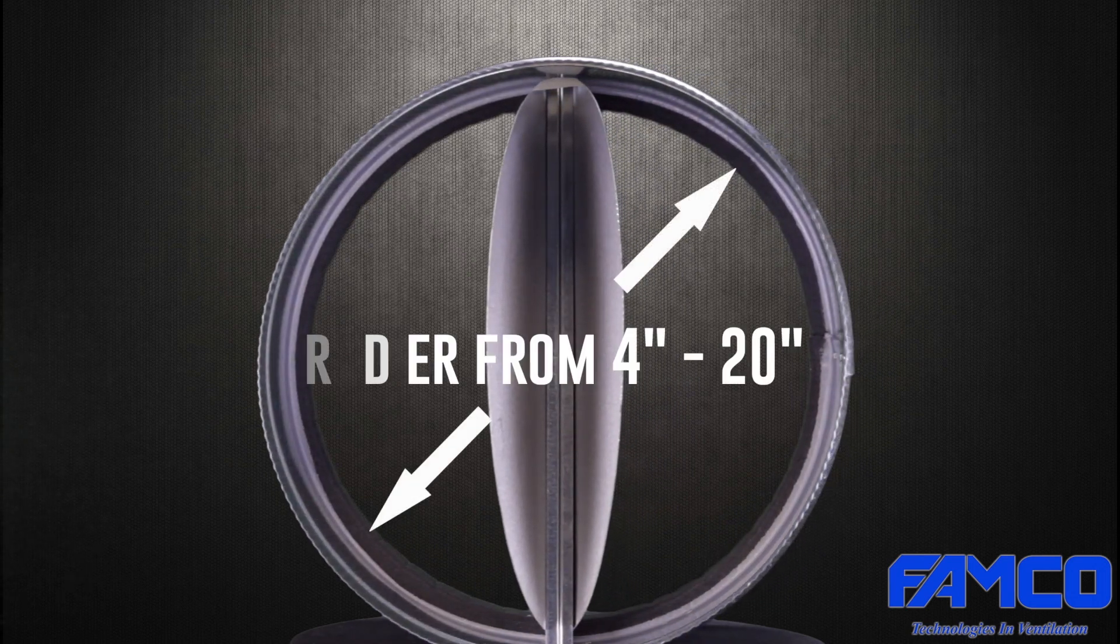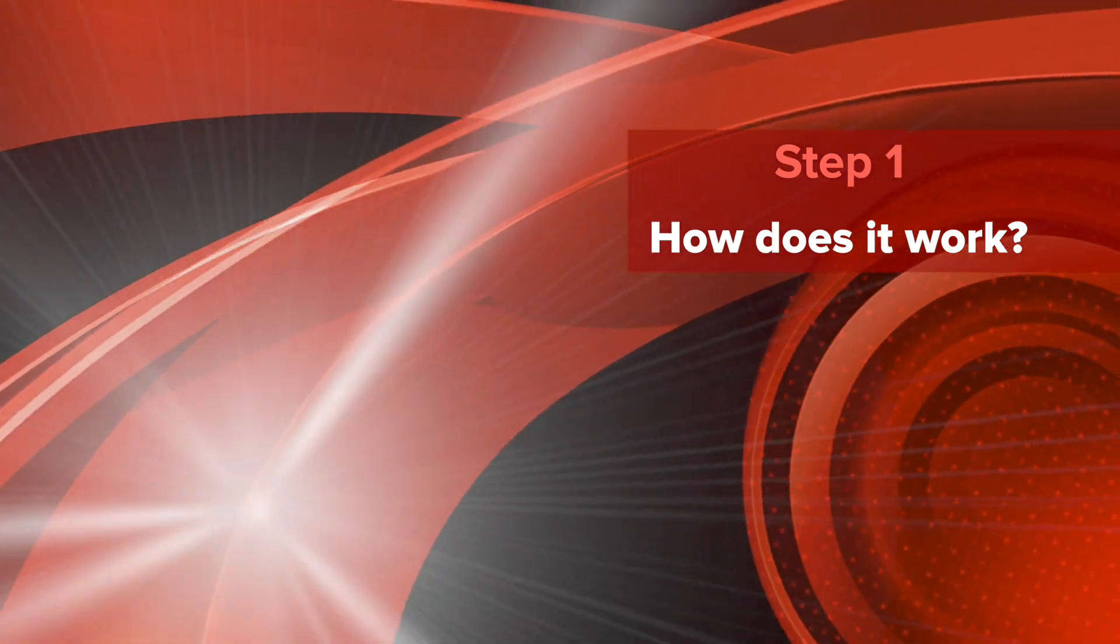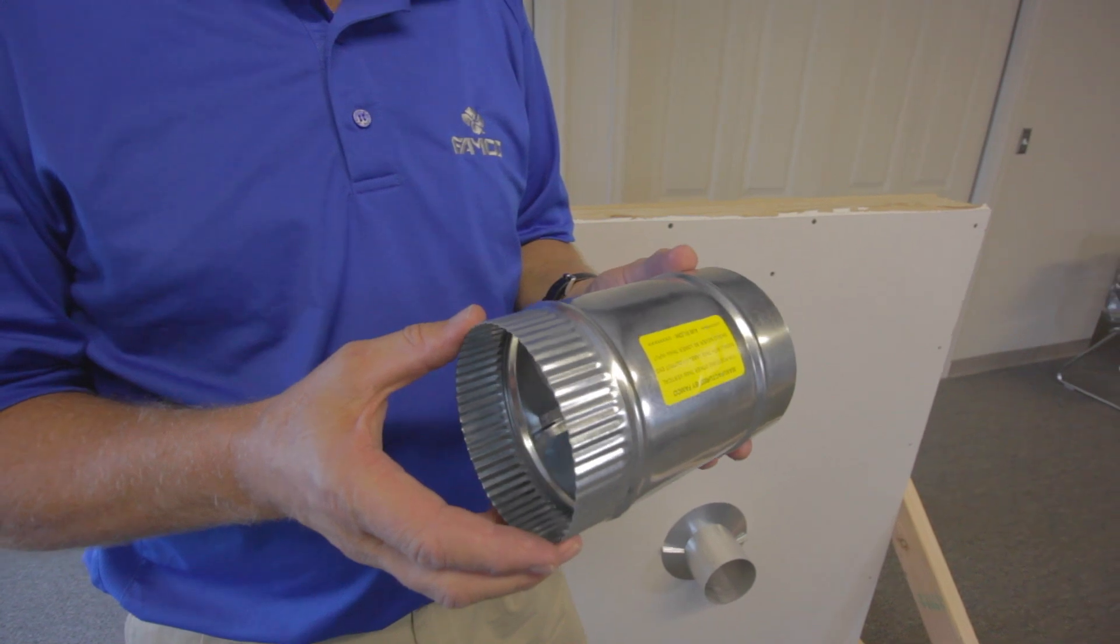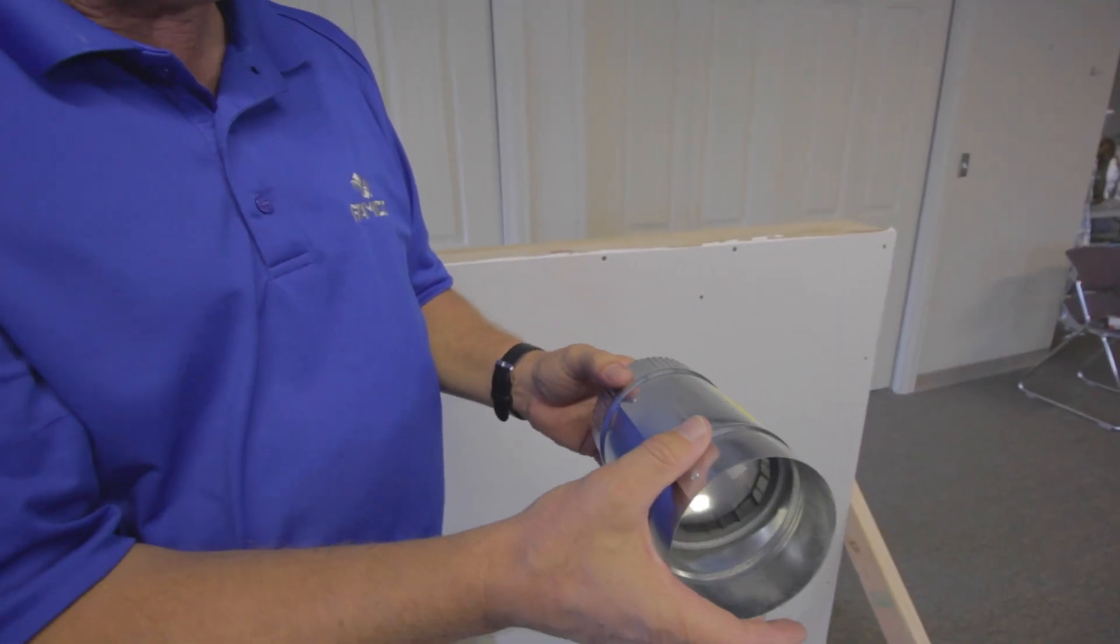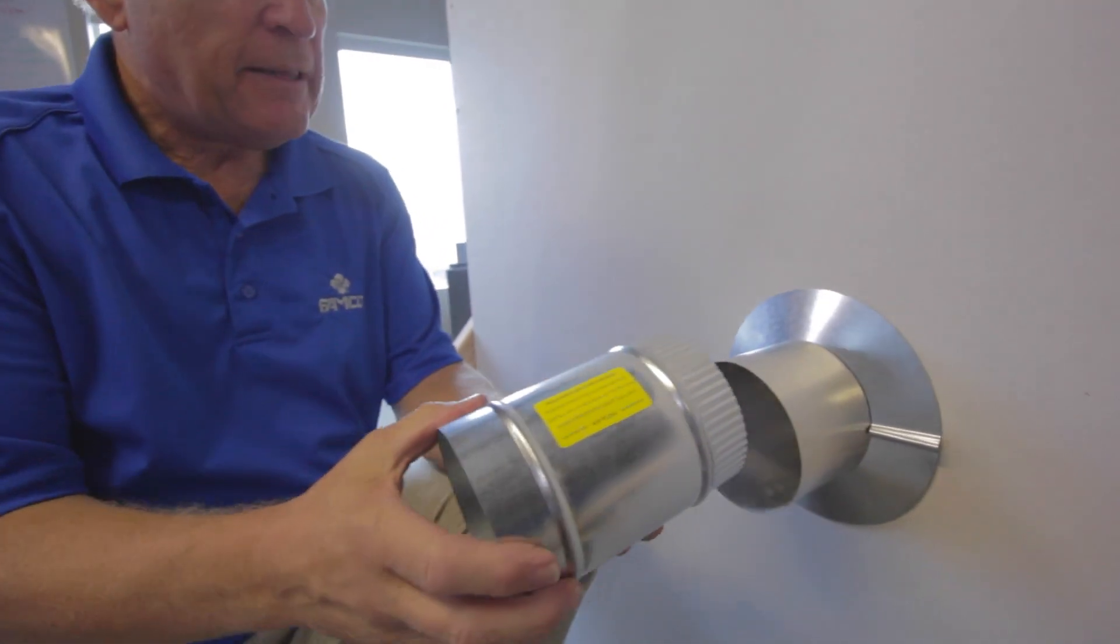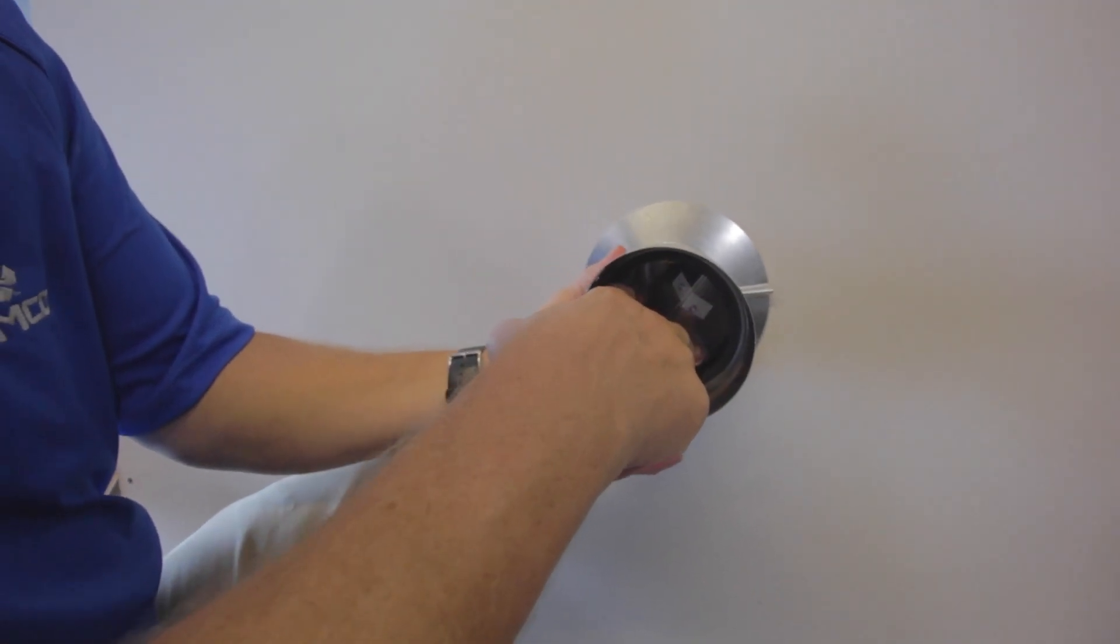The first step in our installation is to explain how the damper works so that you can correctly install it. Generally a damper is used to stop cold air from leaking back into your home. It is important that the damper is installed with the correct orientation to allow the exhaust air to flow out of the home while stopping the cold air from flowing back in.